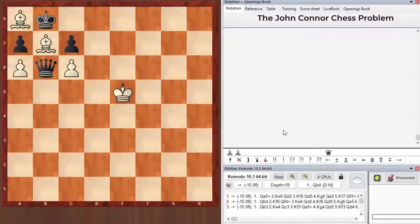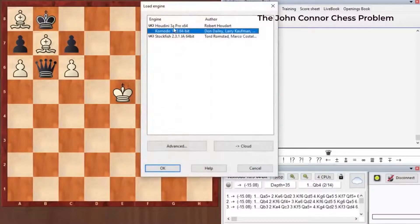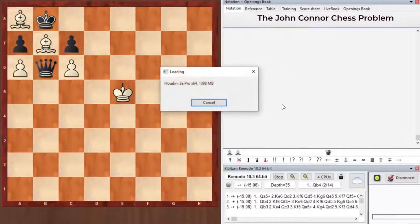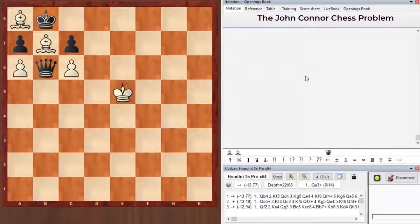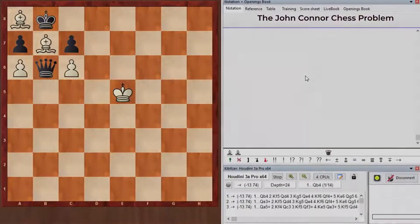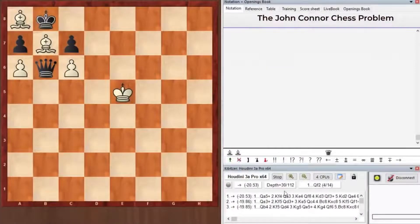Let's try another engine. For instance, let's try Houdini 3. That engine also doesn't see the win at first. Minus 13. All the moves are evaluated the same. That means that there is no concrete win. Houdini has been calculating this position for about 7 minutes. But also as you can see, it finds no win.